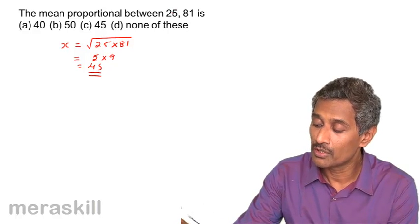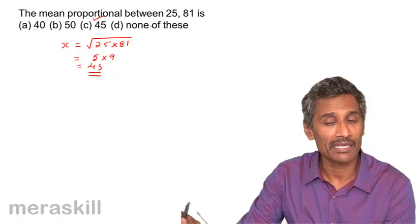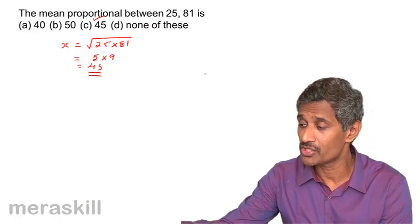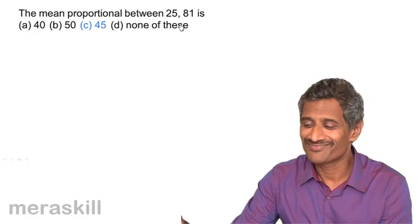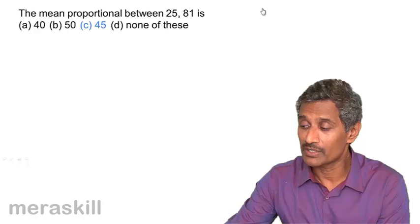So, the mean proportional of 25 and 81 is 45. Do we have it right? Let's check it. Oh, yes, we do have it. Let's check the next set of problems or the next one.